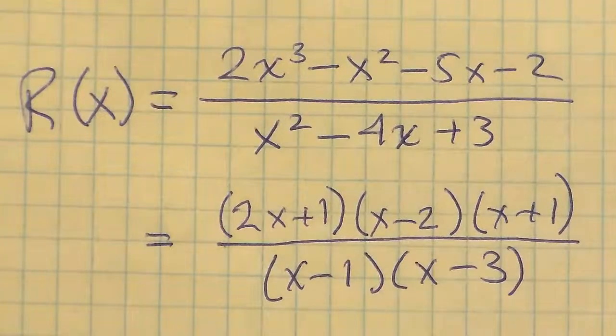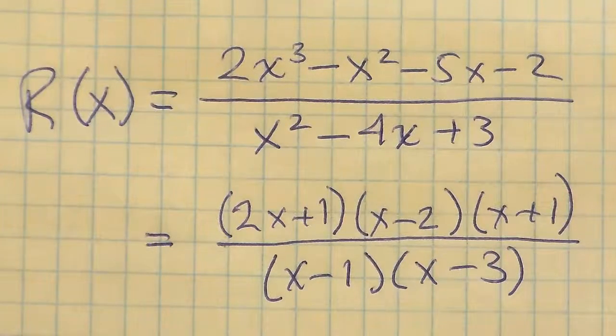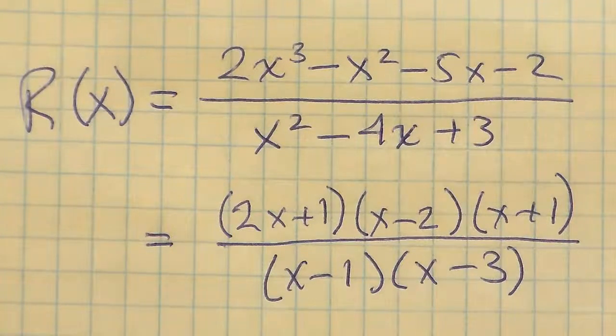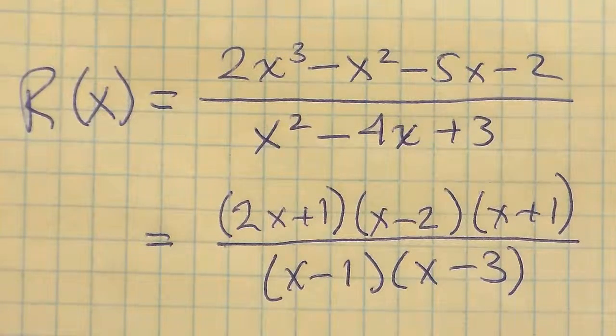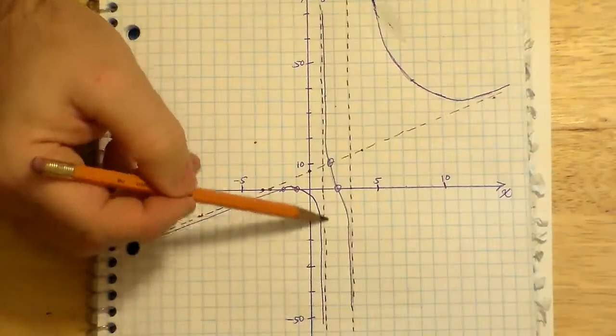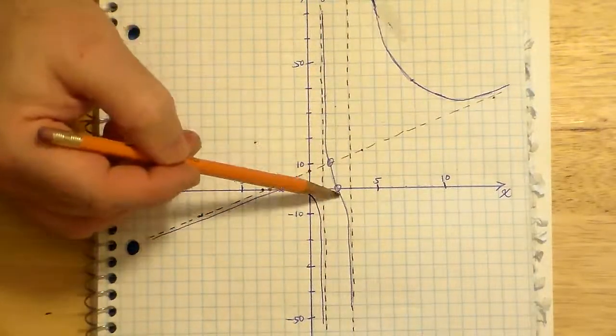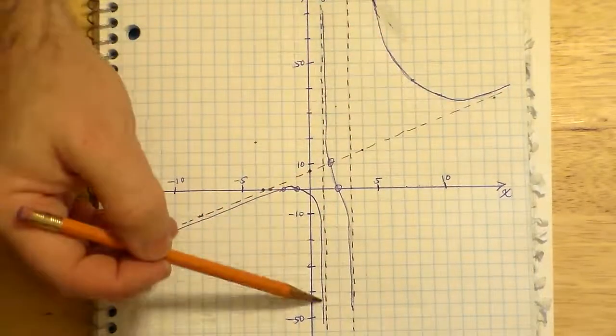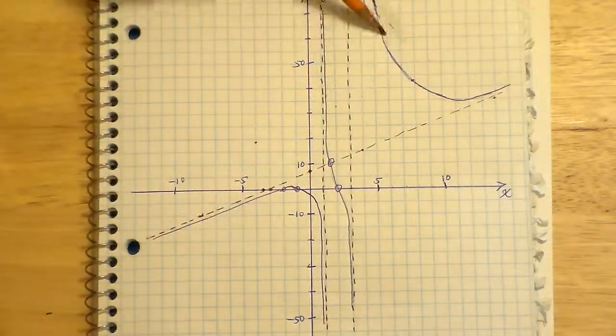So here you can see the factorization. The reason we had the two vertical asymptotes is because the denominator had x minus 1 and x minus 3 as factors, indicating two vertical asymptotes at x equals 1 and x equals 3. Meanwhile, there are three zeros from our rational function: one at negative a half, one at two, and one at negative one. And you can see how that works—you can see the three zeros here, you can see the two asymptotes.